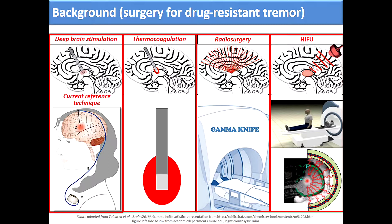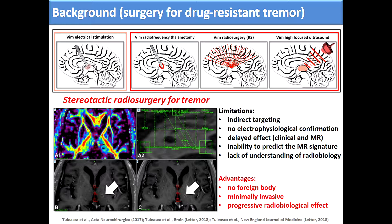Radiosurgery is just one of the surgical alternatives. It has several limitations, including indirect targeting with no electrophysiological intraoperative confirmation of the target, a delayed effect, and the inability to predict the MR signature, which goes back to a lack of understanding of radiobiology. It also has several advantages, including no foreign body, it is minimally invasive, and has a progressive radiobiological effect.